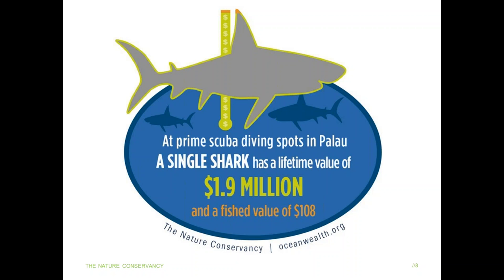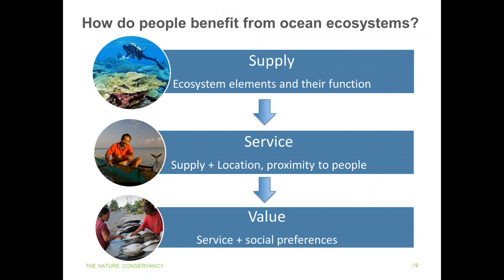At the other extreme, there's a study assigning a value of $1.9 million to a single shark because of its appeal to scuba divers in Palau. That starts to take us toward the notion that those great big numbers — the $20 to $60 trillion figures for the entire ocean — are not evenly distributed. As this example suggests, sharks don't occur everywhere; they're concentrated in places that are accessible to divers. Clearly, we need to better understand how the ocean's wealth is produced, where it's produced, and how it's produced.